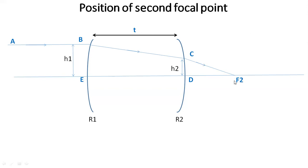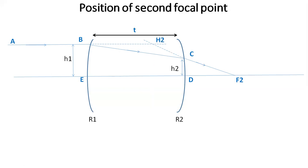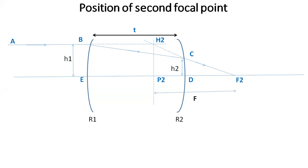To find the distance of the second focal point from the surface — according to the sign convention, we measure all distances from the pole along the principal axis, so we have to find the distance DF2. We extrapolate AB in the forward direction and F2C in the backward direction; they meet at point H2. At H2 we draw a plane perpendicular to the principal axis and get P2, the second principal point. The distance between P2 and F2 is the focal length of the thick lens. Remember, this is the case when both spherical surfaces are present.